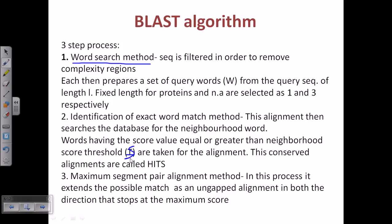Any alignment recognized by BLAST must have a higher score than the scoring threshold. Scoring is done after the exact match, and only alignments with values higher than the scoring threshold are counted. Third is the maximum segment pair alignment — when you get a match, you extend it in both directions, one base at a time.